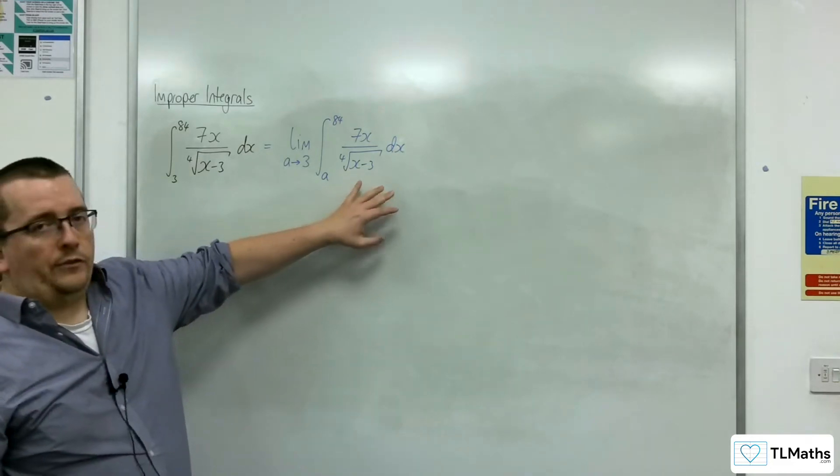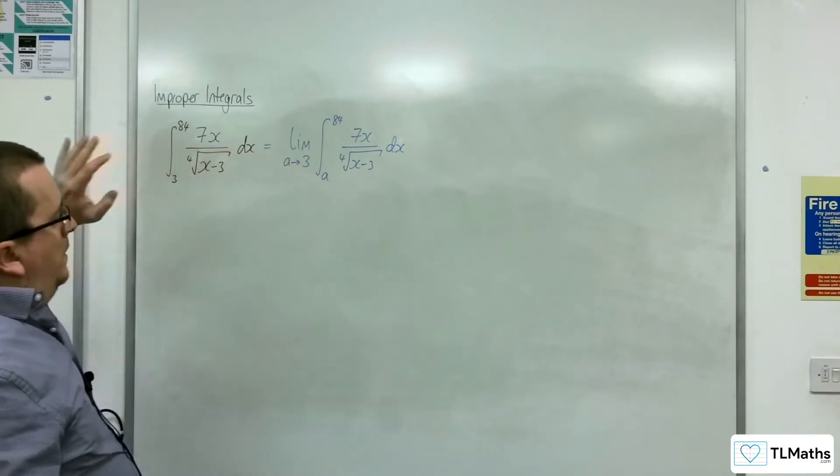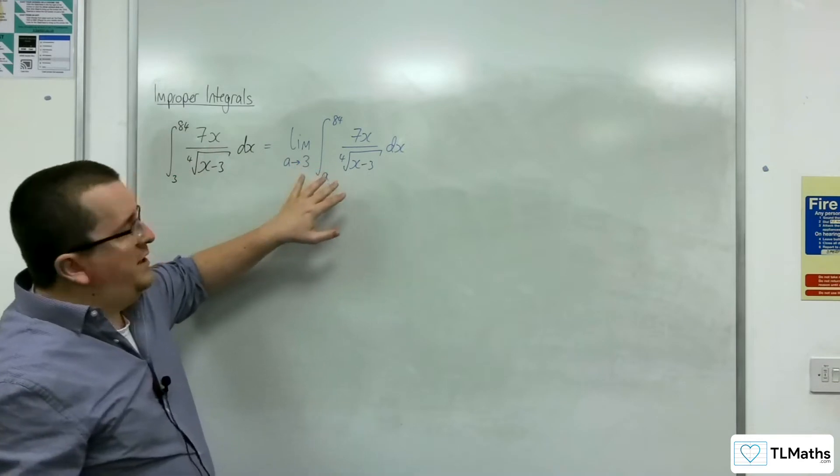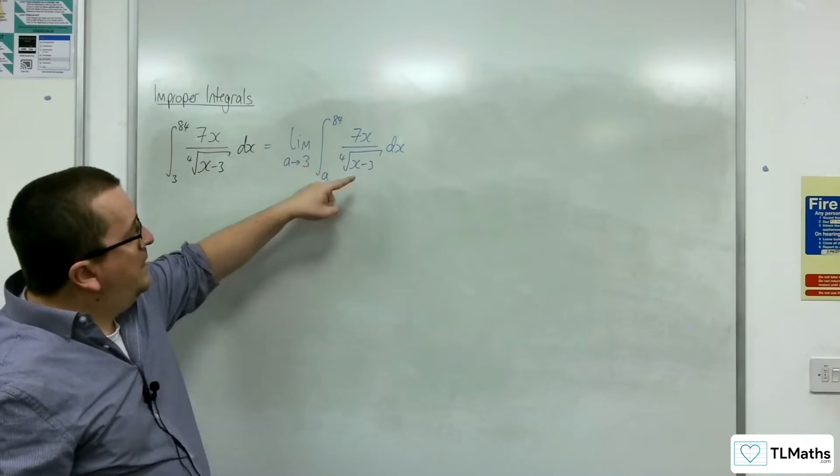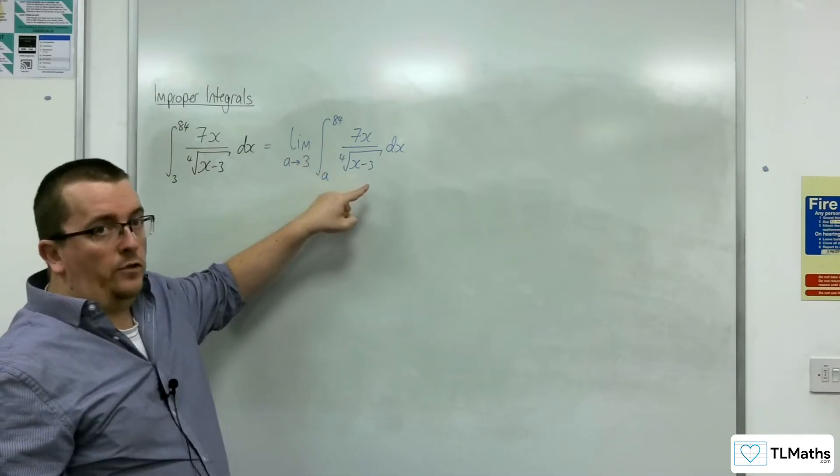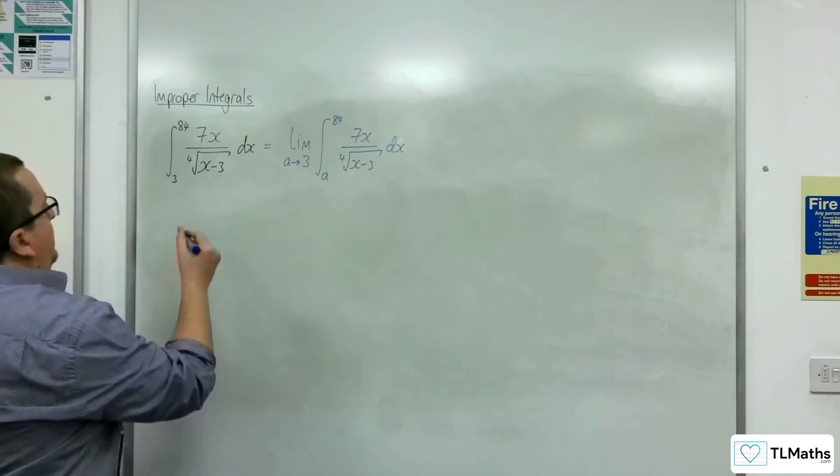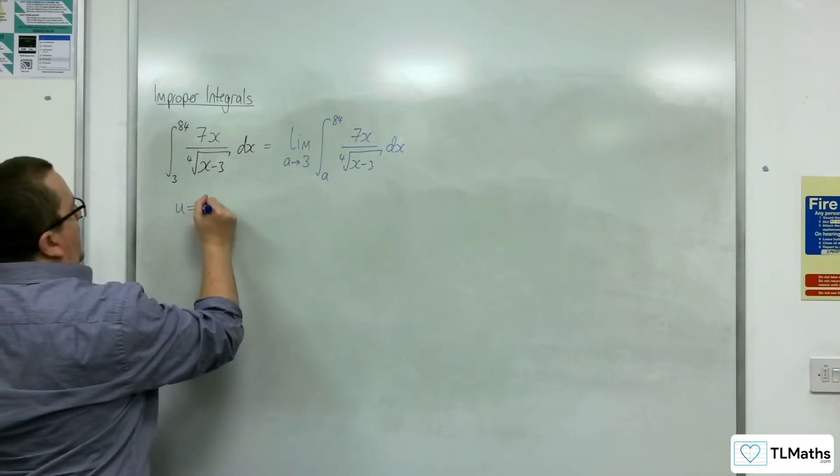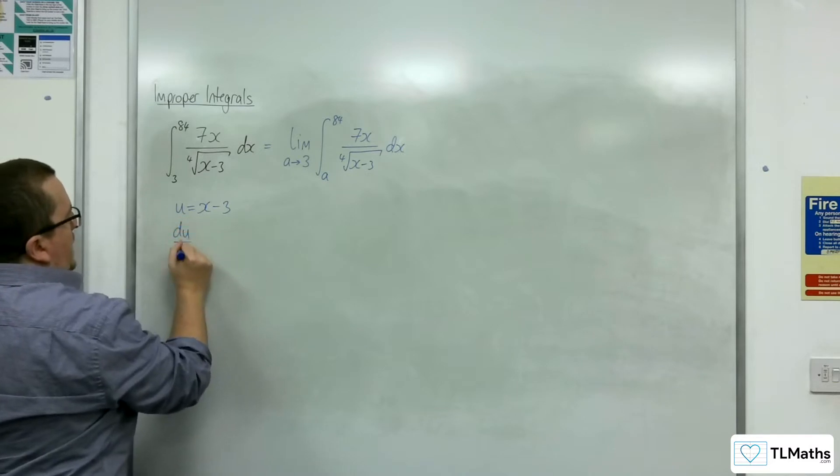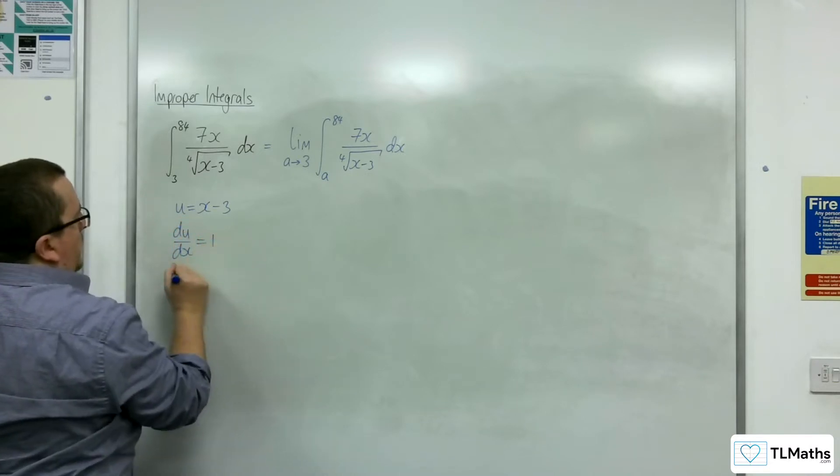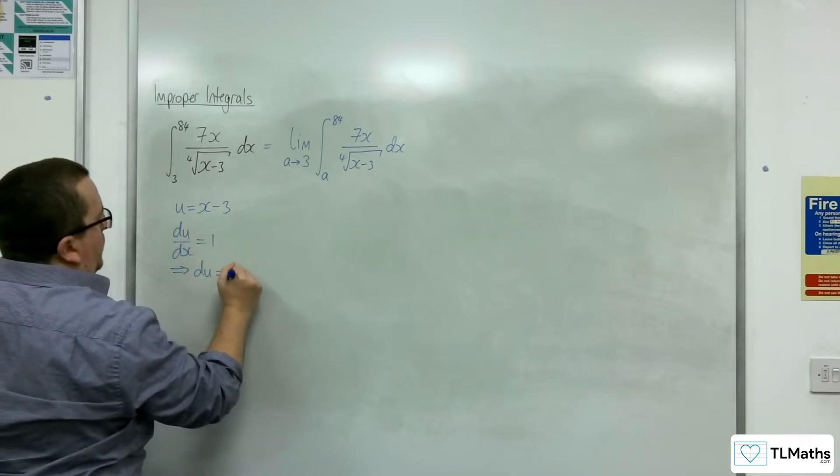Now, in order to integrate this, the best way that I can see would be to use integration by substitution using u is equal to x take away 3. So that's what I'm going to do. u equals x take away 3, so du by dx will be equal to 1. So that means that du is equal to dx.